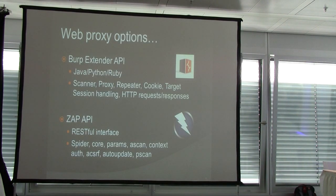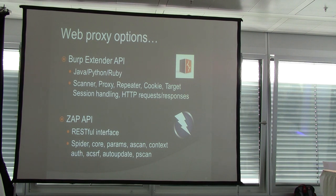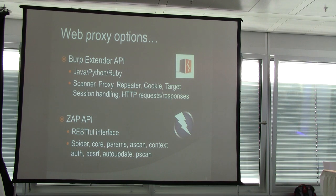Coming back to the other side of the equation — web proxy options. Burp Extender APIs are very cool and represent the way to go. The API allows you to increase the longevity of web proxy technology. Through Burp's API, you can connect to suite components like the scanner, repeater, intruder, proxy history, and session handling. With the Zap API, more or less the same — for instance, a Python script can connect to Zap's RESTful interface and say 'spider this website, then collect all URLs from history.' These are really powerful things we can use together.